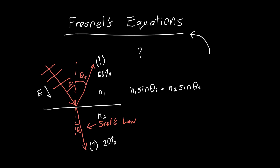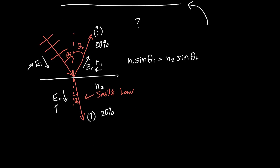Fresnel's equations give a relationship between the incident amplitude EI, the reflected amplitude ER, and the transmitted amplitude ET. So if we know the incident amplitude, we can use Fresnel's equations to calculate the reflected amplitude and the transmitted amplitude. So without further ado, let's dive right in.